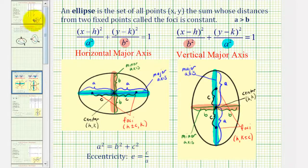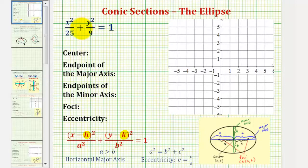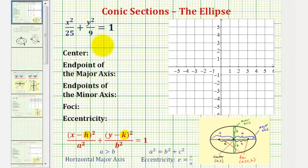Going back to our first example, the center has coordinates (h, k). Looking at our equation, since our numerators are x squared and y squared, that means h and k would both be zero, and therefore the center of our ellipse would be the origin with coordinates (0, 0).